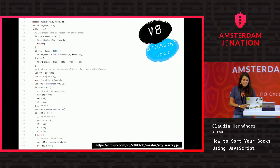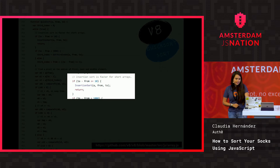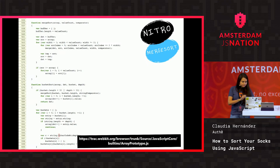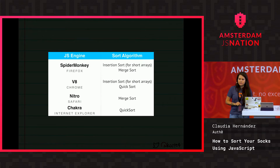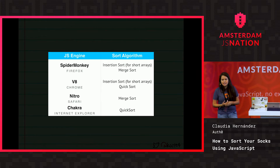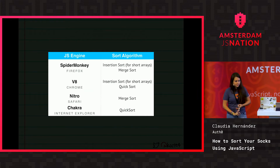V8 is using Quicksort. Similar to SpiderMonkey, V8 is also using InsertionSort for smaller arrays to keep performance. Nitro from Safari is also using an implementation of MergeSort. And Chakra is using an implementation of Quicksort. To sum up, most popular JavaScript engines use a combination of three algorithms: InsertionSort, MergeSort, and Quicksort.